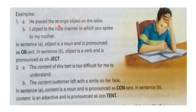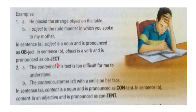Here are the examples. Sentence A: 'He placed the strange object on the table.' Sentence B: 'I object to the rude manner in which you spoke to my mother.' In sentence B, 'object' is a verb, and in sentence A, it is a noun. In sentence A, 'object' is a noun and is pronounced as 'OBject' — stress falls on 'ob'. In sentence B, 'object' is a verb and is pronounced as 'obJECT' — the stress falls on 'ject'.